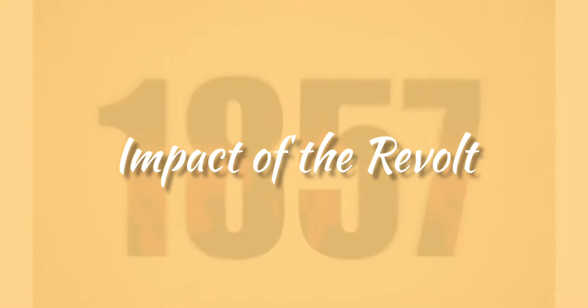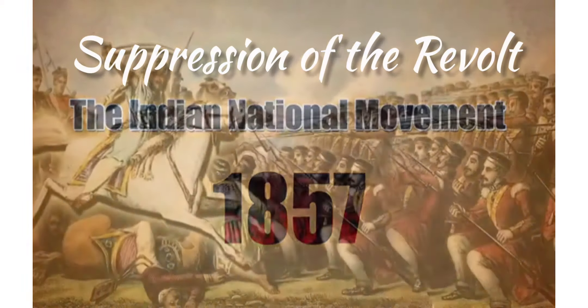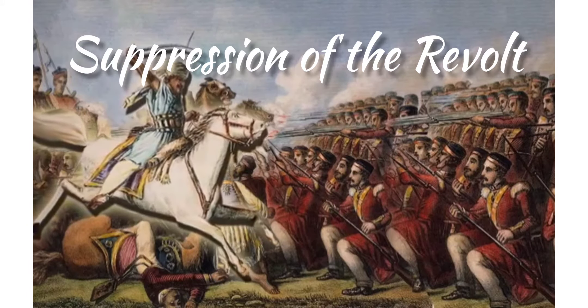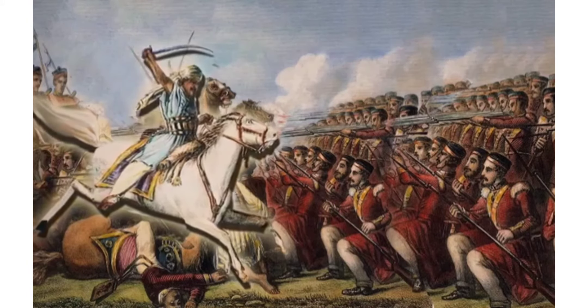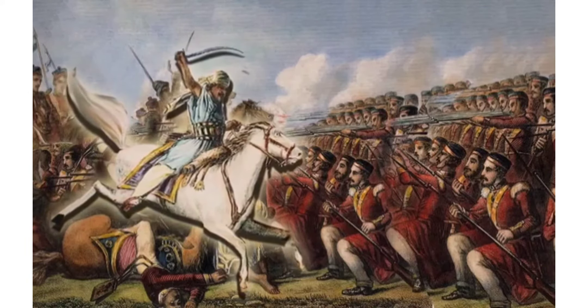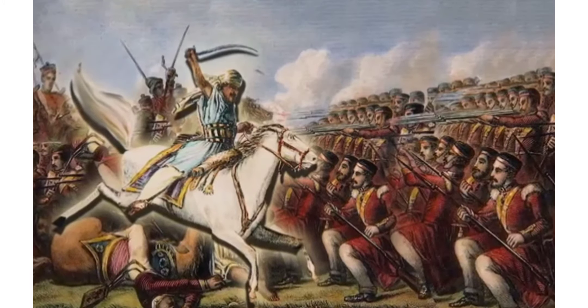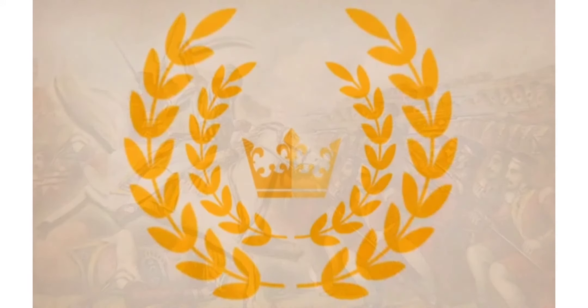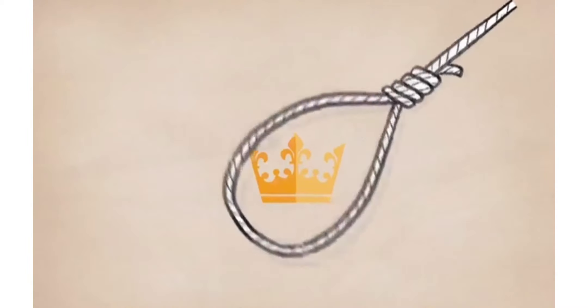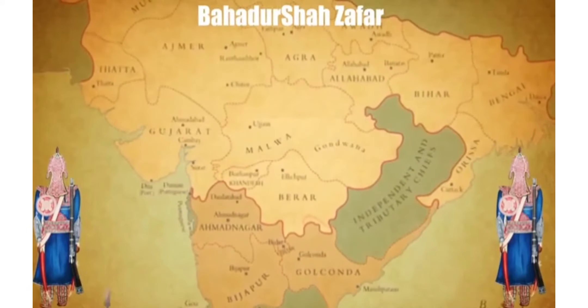First, let's see the suppression of the revolt. The serious nature of the revolt came as a shock to the British. Their effort to regain control over their territories was led by their best commanders, such as Henry Havelock, James Outram, Colin Campbell, Hugh Rose, and John Lawrence.